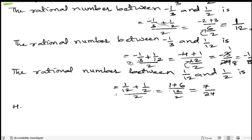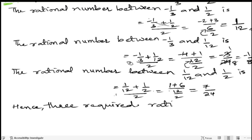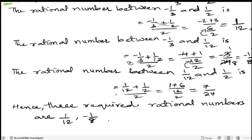Hence, the three required rational numbers are 1 by 12, minus 1 by 8, and 7 by 24.